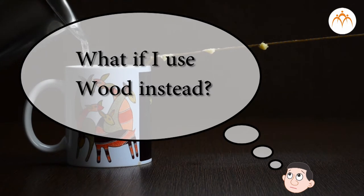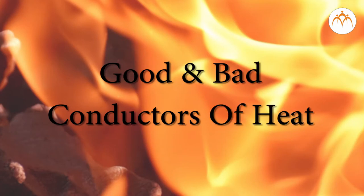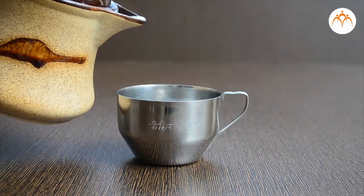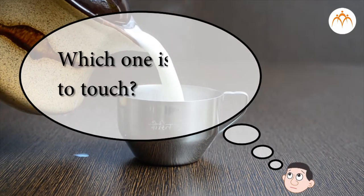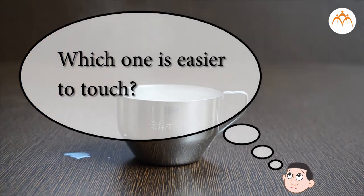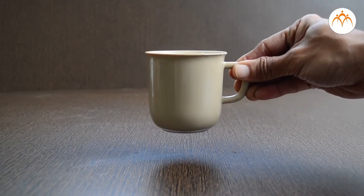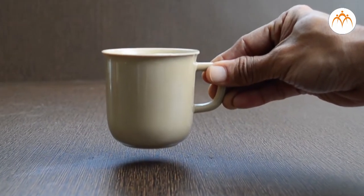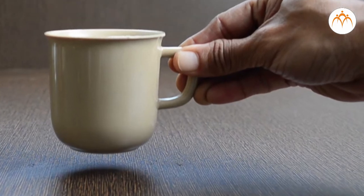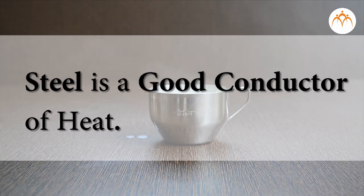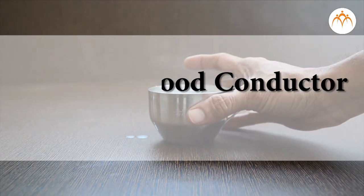What will happen if I do the same activity with wood? Good and bad conductors of heat. Here are two cups — a steel cup and a plastic one. Let me pour hot milk in both cups. Which one is easier to touch or drink milk from? The plastic cup is easier — I can hold its handle and drink milk. The steel cup is very hot. Steel is a good conductor of heat; heat flows through steel very easily.